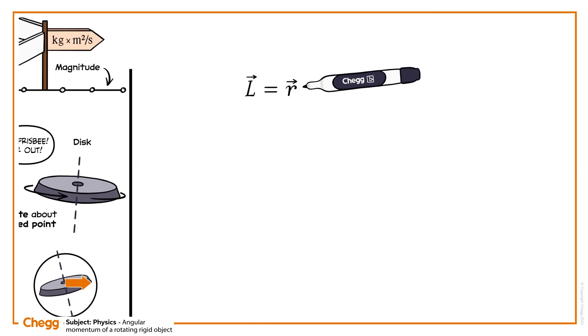Knowing that the linear momentum, vector P of an object, equals the mass M times the velocity, vector V, we can rewrite the expression as L equals vector R times M vector V, where vector R is the distance from the rotational axis, M is mass, and vector V is velocity.